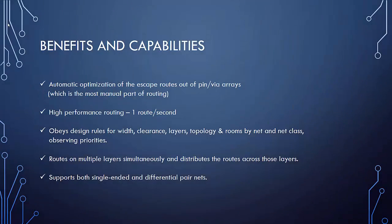What are the benefits and capabilities of ActiveRoute? It can give us automatic optimization of the escape routes, which is the most manual part of routing. It's also a high performance routing technology which completes one route per second. It can obey design rules for width, clearance, layers, and more while also observing the priority of the rules. It can route on multiple layers simultaneously and distribute routes across those layers, and it supports both single-ended and differential pair nets.